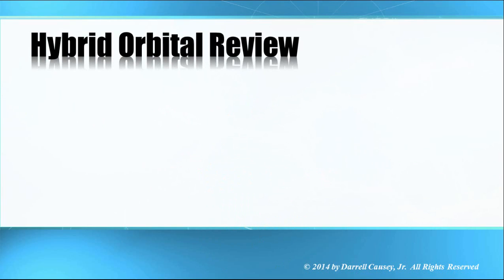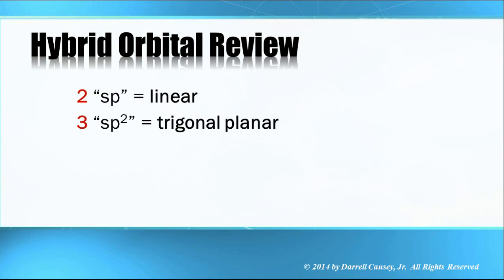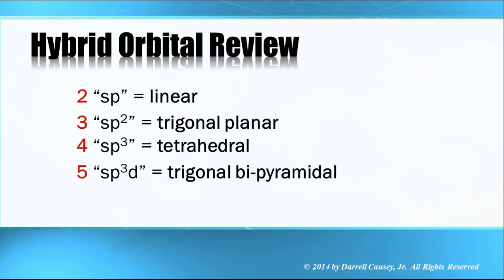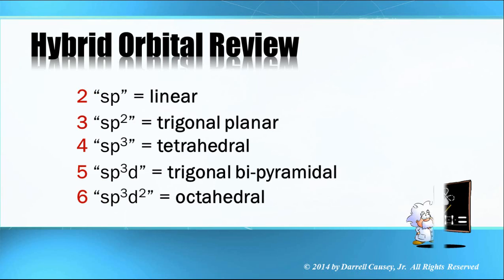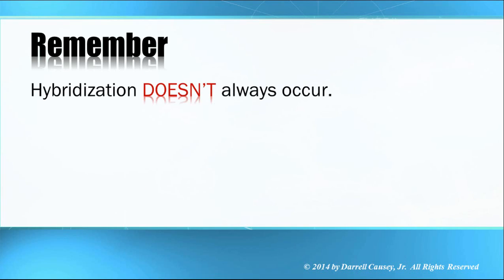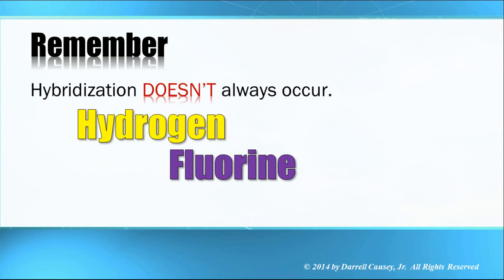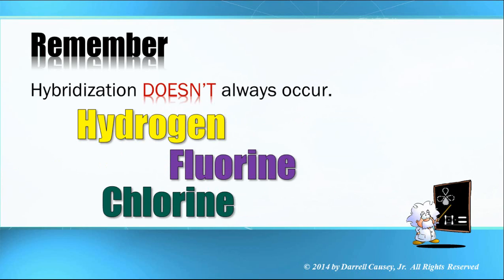Just a quick review: sp is linear, sp² is trigonal planar, sp³ is tetrahedral, sp³d is trigonal bipyramidal, and sp³d² is octahedral. Now remember, hybridization doesn't always occur — such as on hydrogen, fluorine, and chlorine — they only have one bond and really don't need to hybridize.